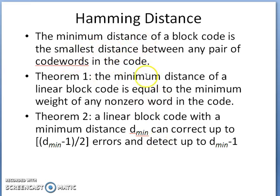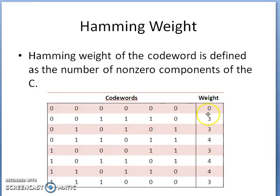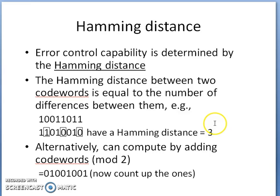If you find the Hamming distance for all pairs of codewords, you can determine the minimum distance, which is the smallest distance between any pair of codewords in the code. Theorem 1 states that the minimum distance of a linear block code equals the minimum weight of any nonzero codeword in the code. From the example, the minimum distance d_min is three.